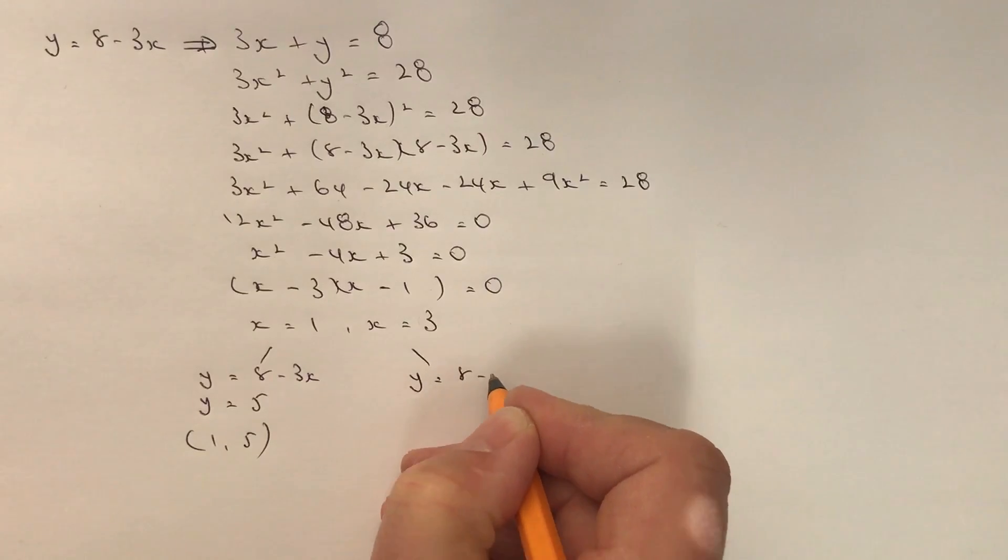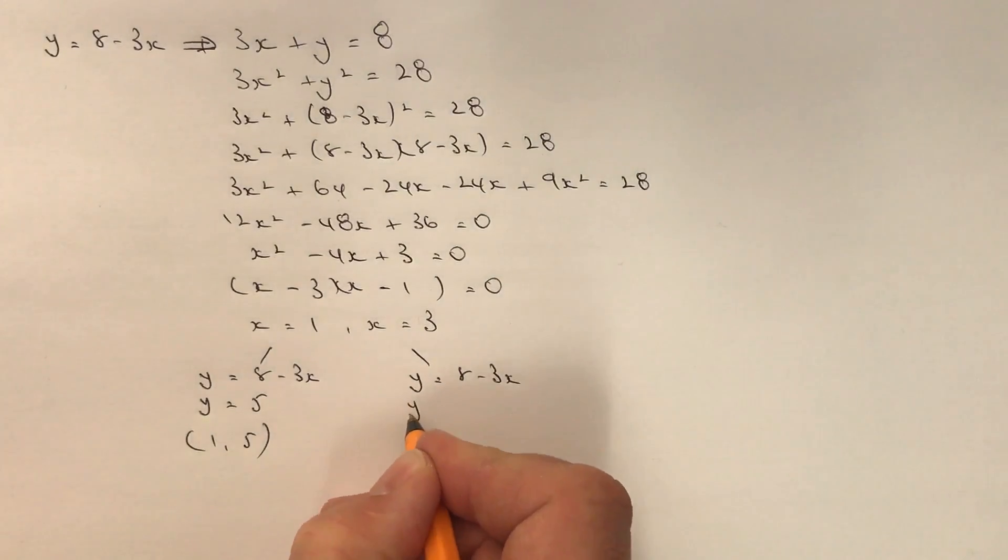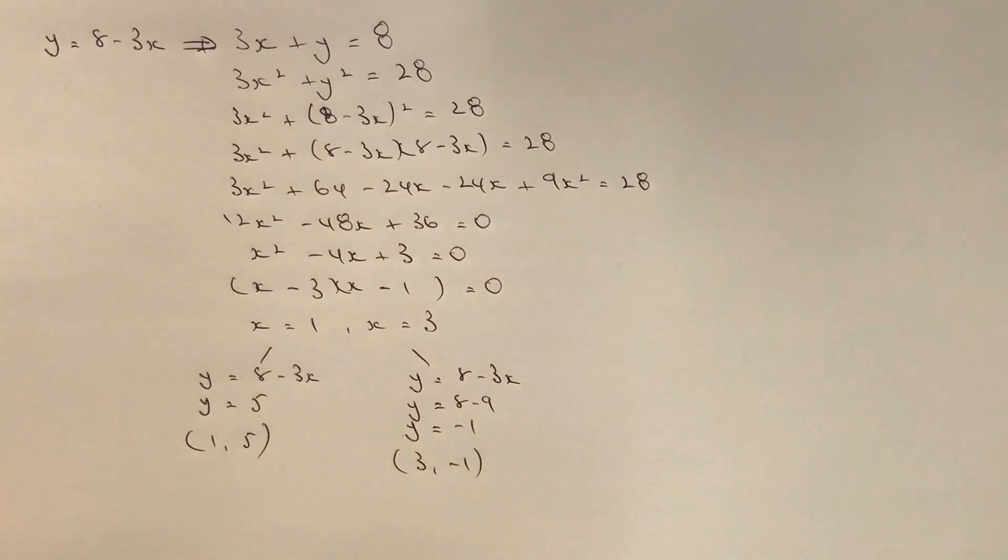And then the other one is where x equals 3. Y equals 8 minus 3 times x, so that's going to be y equals 8 minus 9, or y equals minus 1. So the other value is going to be (3, -1). And that's the answer to this particular question.